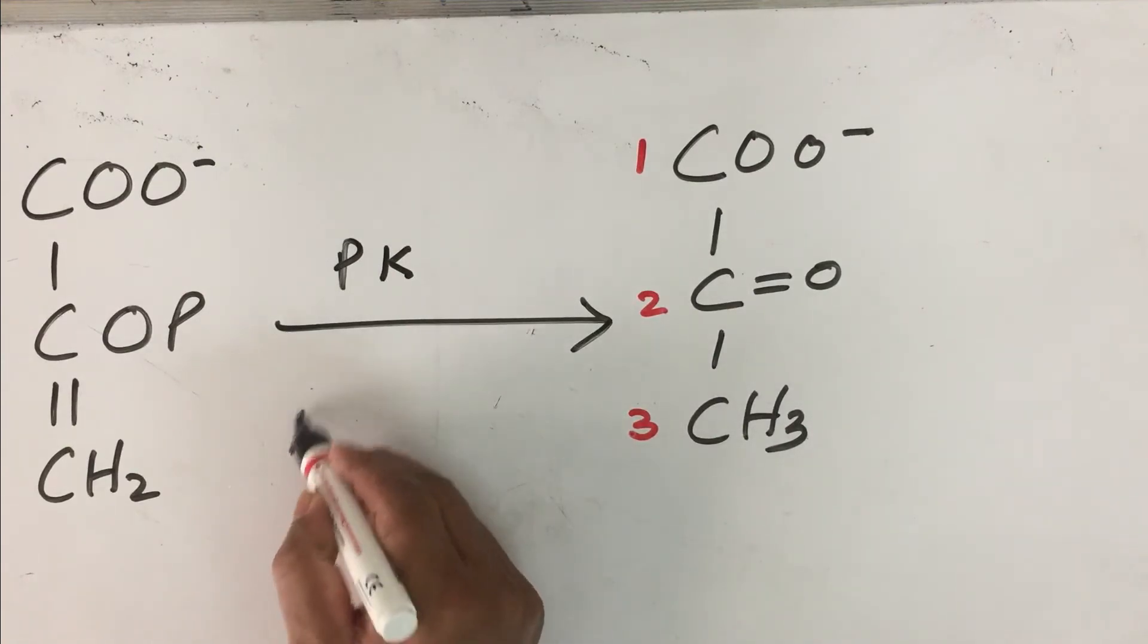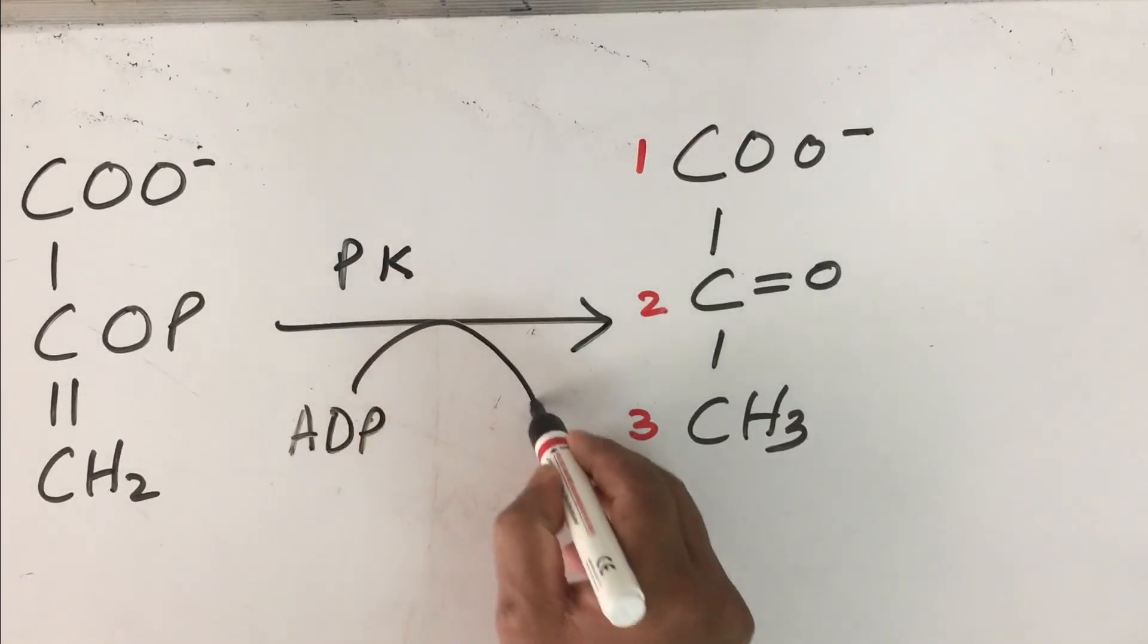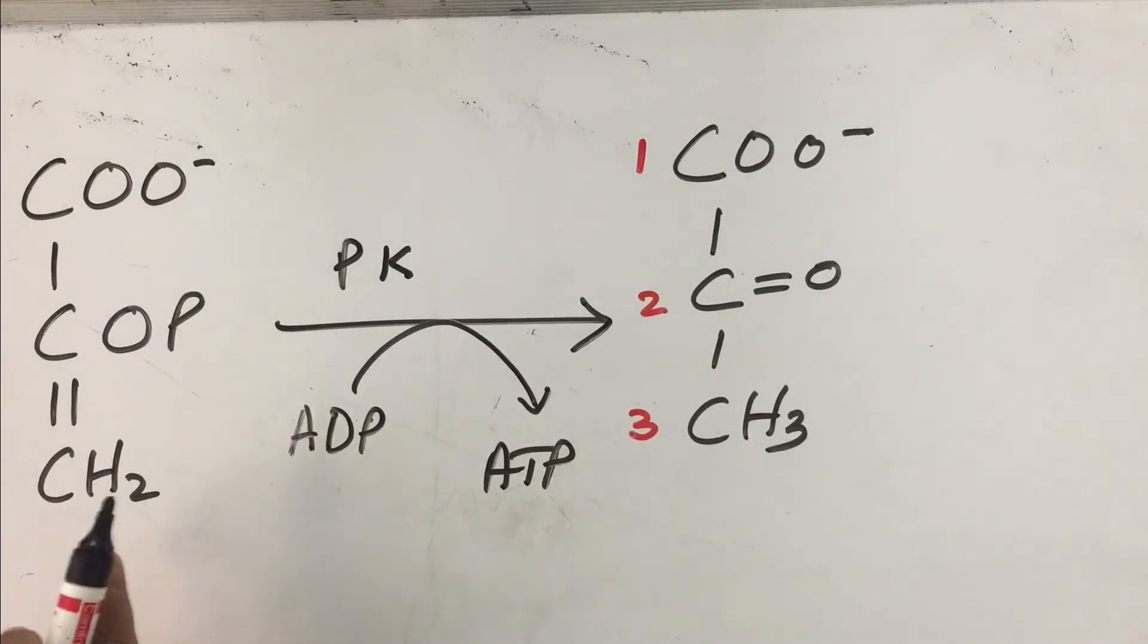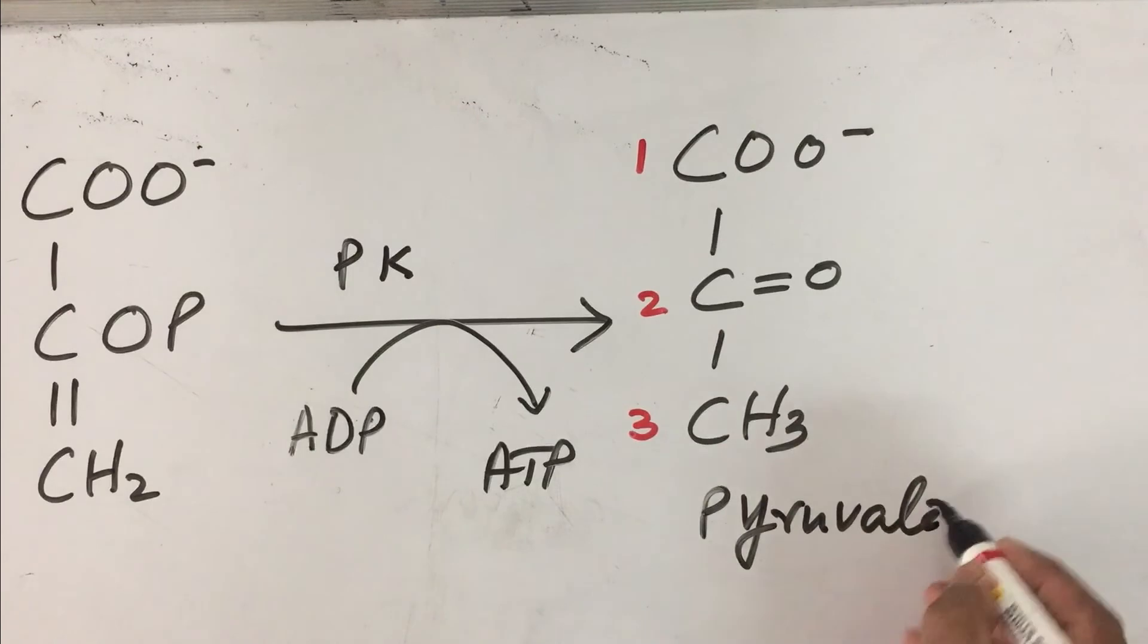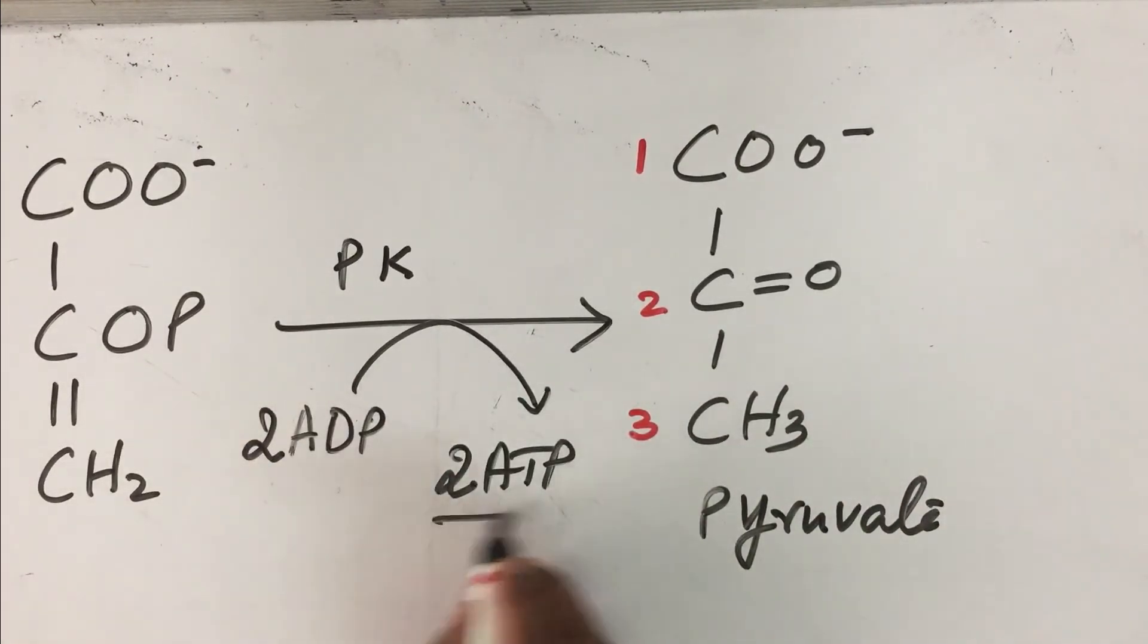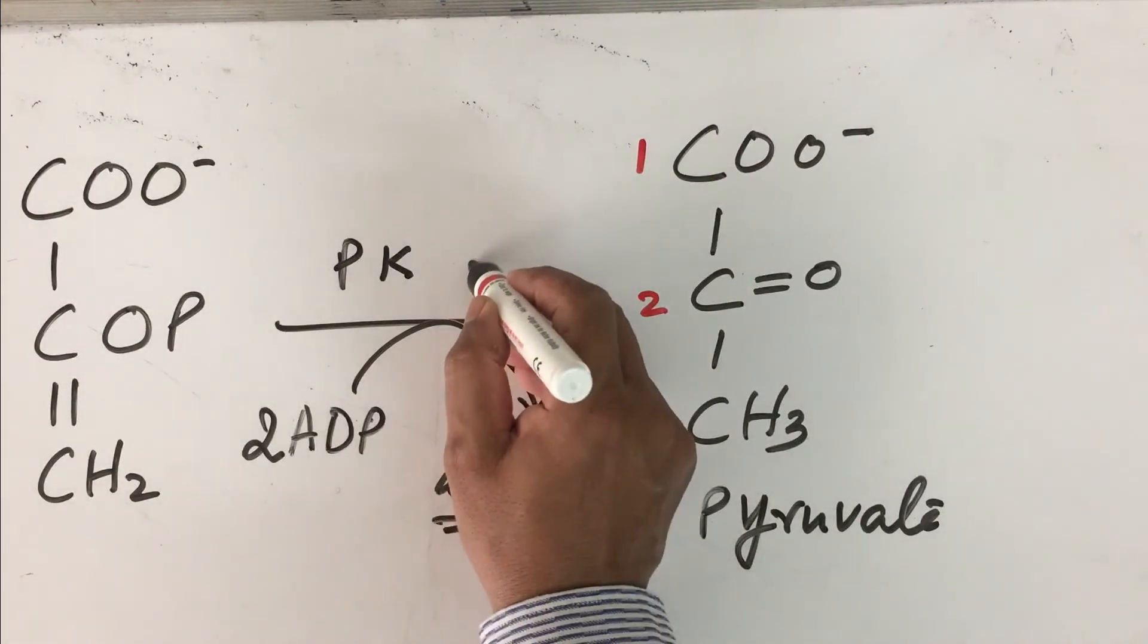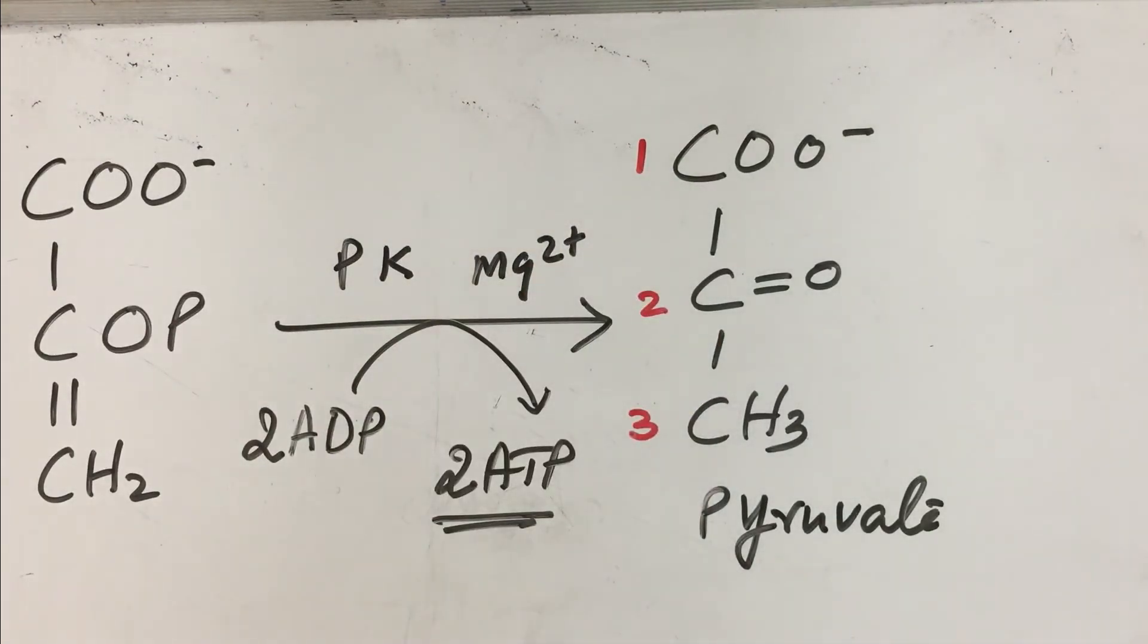Here, ADP is converted to ATP molecule. Remember, we originally started with glucose, so we will be getting 2 phosphoenolpyruvate and 2 pyruvate, meaning we will be getting 2 ATP molecules. This is the net gain of ATP. This enzyme requires Mg2+ for activity. Most enzymes in the glycolytic pathway require Mg2+ for activity. The net delta G of this reaction is minus 31.4 kilojoules per mole, which is the remaining energy after making ATP molecule.